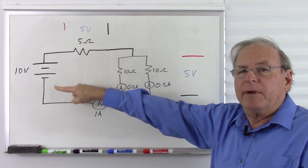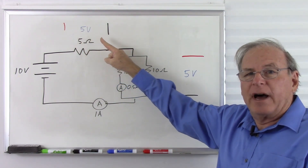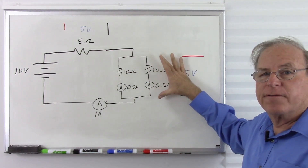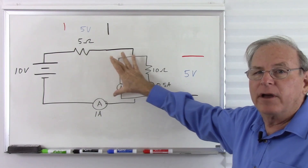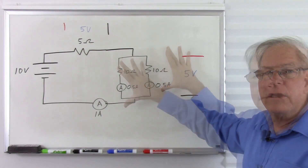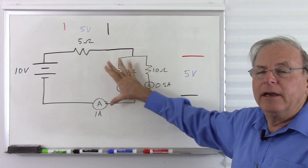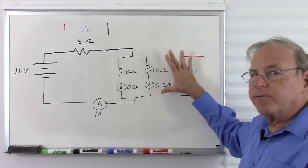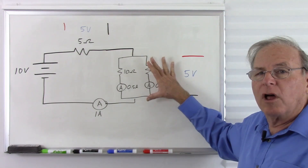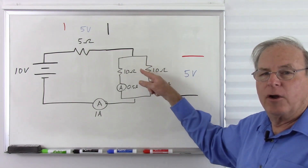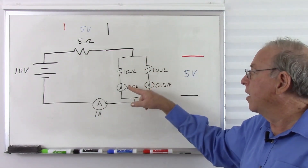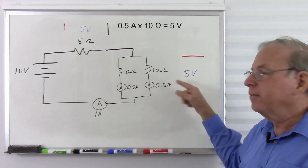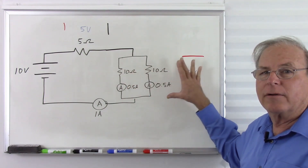Coming from the battery, we lose 5 volts across the first resistor. Then we have the remaining 5 volts across the pair of resistors in parallel. That's how the voltage and currents get distributed. Let's confirm this with Ohm's Law: 0.5 amps times 10 ohms equals 5 volts. Same thing on the other side. It all balances out.